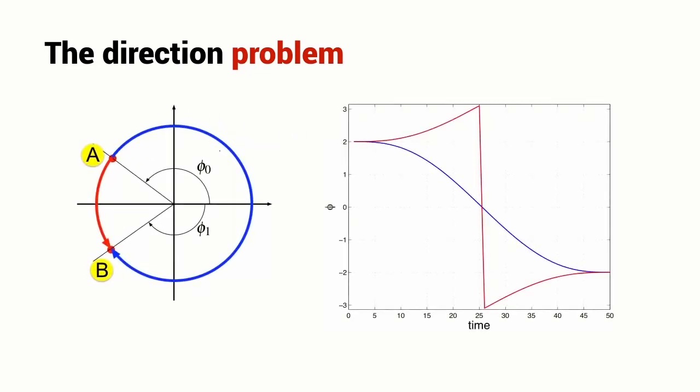If we look at the angle as a function of time, the long path is given here in blue. We see we are moving from two radians to minus two radians whereas the short path which is shown in red moves through an angle of pi radians, pops back at minus pi radians and then moves quickly to the destination point B of the value of minus two radians.